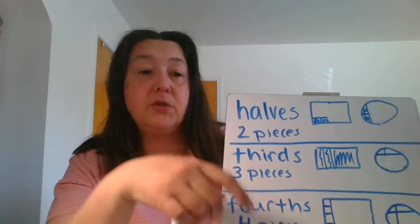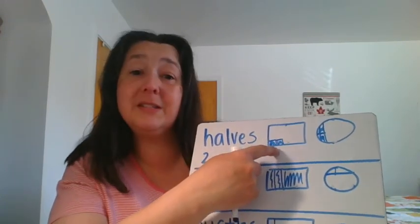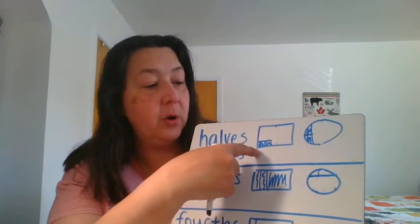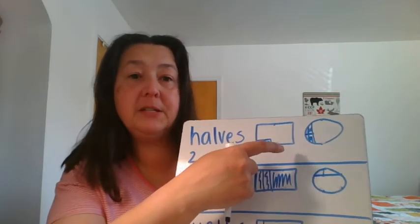Now I'm going to change the way that I draw the lines so that you can see some examples that are not the same size pieces. So these are bad examples, because this is not true. This is showing halves if I have two pieces, but if I cut two pieces that are not equal, that is not half of the entire shape. So even though you have two pieces, that's not half.